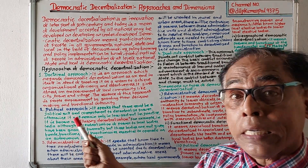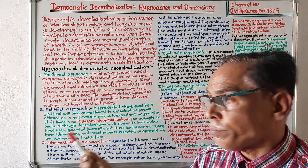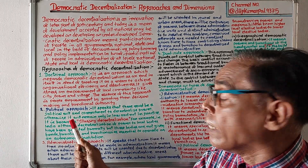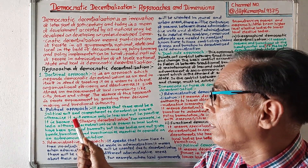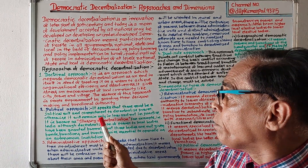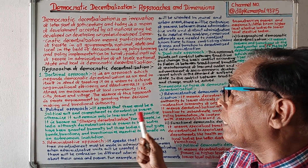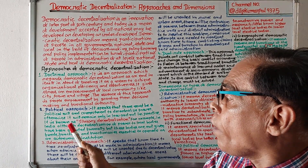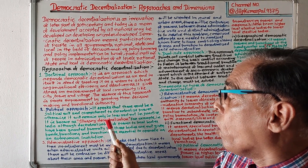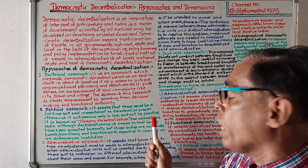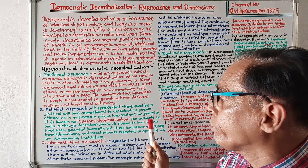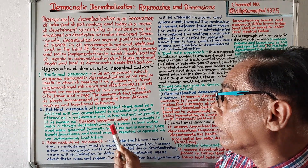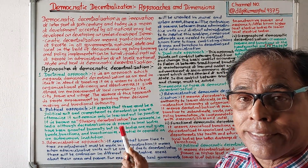Number two: Political approach. It speaks that there must be political will and commitment to decentralization. Otherwise, it will remain only in law and not in practice. It is known as illusory decentralization.